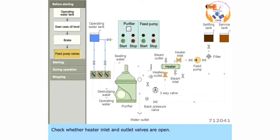Check whether the heater inlet and outlet valves are open. Open back pressure regulating valve at the outlet of the purifier. If the oil is supplied without opening the back pressure valve, the oil will overflow from the water side.